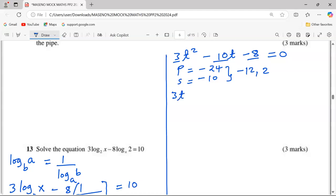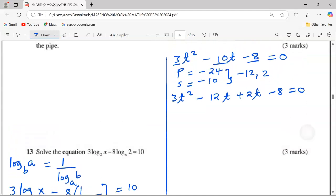So 3t² - 12t + 2t - 8 = 0. I've replaced -10 with -12 and +2. In the first two terms, whatever is common is 3t, so we factor it out to remain with (t - 4). Then in the second two terms, we have 2 being common, so that will remain with (t - 4), and this is equivalent to 0.